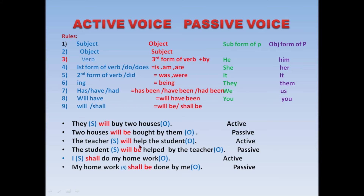Next sentence: 'I shall do my homework.' 'Shall' is identified — change to 'shall be'. Subject becomes object, object becomes subject. 'Homework' was the object — made it subject: 'My homework shall be done by me.' 'Do' becomes 'done' — third form of verb. 'By' is added. 'I' subject becomes 'me' object. So nine rules are now clear with only one rule remaining.